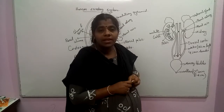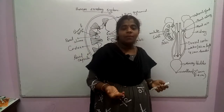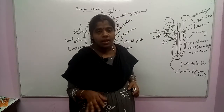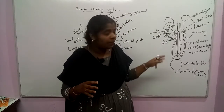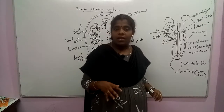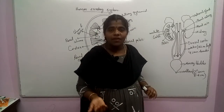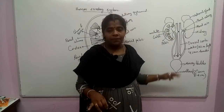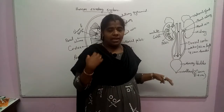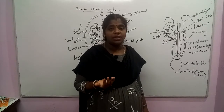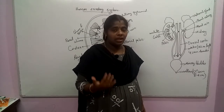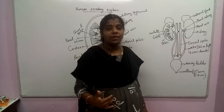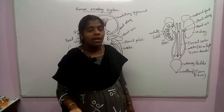The dorsal aorta is the vessel that brings blood from the heart to the kidney for filtration. The inferior vena cava takes the blood away from the kidney after filtration and returns it to the heart.